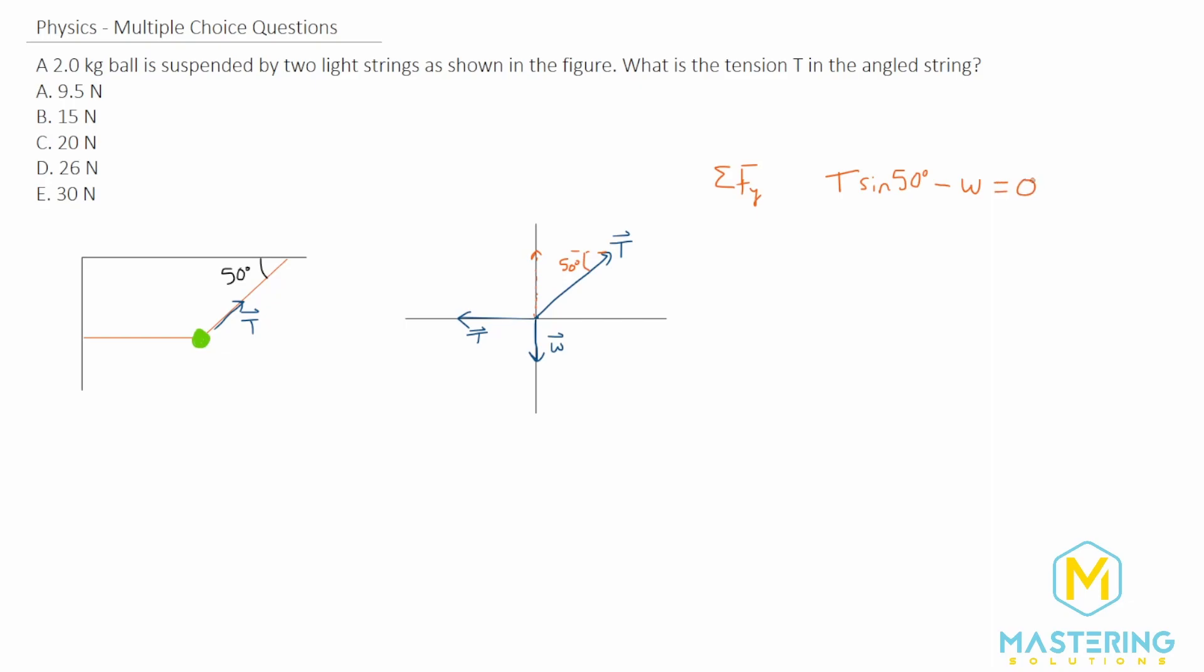That equals zero. We can convert weight to mg, so T sin 50 minus mg equals zero. Moving mg to the other side, T sin 50 equals mg.